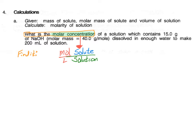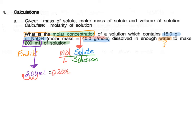Reading through the components: we have 15 grams of sodium hydroxide — that is the mass of our solute. We have a molar mass of 40 grams per mole for sodium hydroxide. It says dissolved in enough water — that's our solvent — to make 200 milliliters of solution. We don't need to know how much water is present separately, because we don't need that for the calculation. First, convert 200 milliliters: move the decimal back three spaces to get 0.2 liters of solution.